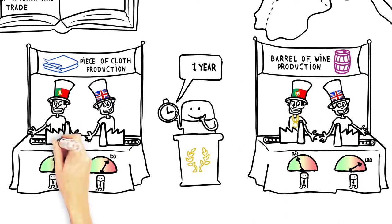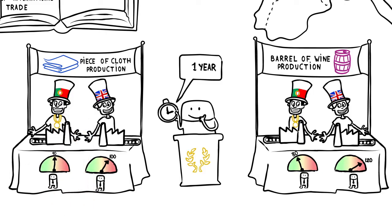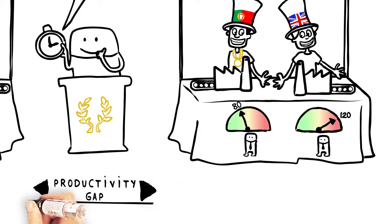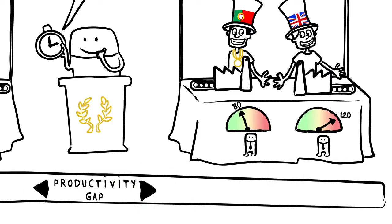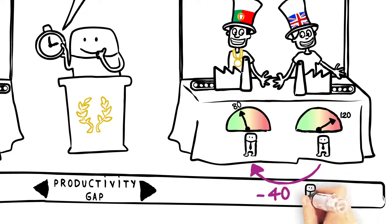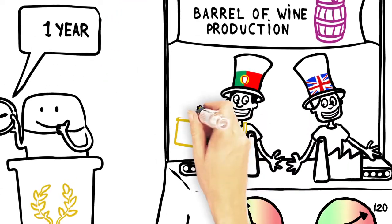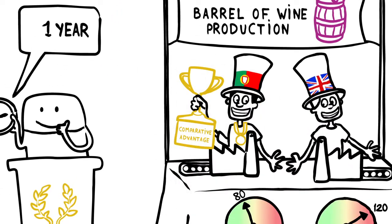Portugal is therefore more productive in both fields. It has an absolute advantage over England. However, since its productivity gap is more significant in the field of wine, since 40 fewer people are necessary to produce a barrel, this is the field in which it should specialize. We say that it benefits from a comparative advantage.